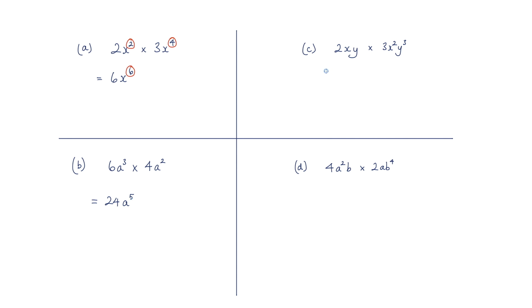For c, we've got 2 multiplied by the 3 is 6. We've got an x multiplied by x squared, so that's x cubed. And we've got y multiplied by y cubed, which is y to the power of 4.